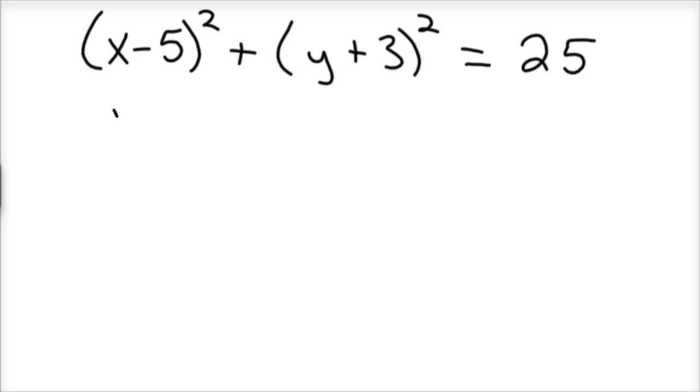Well, the center of the circle in this case is going to be positive 5 and negative 3, because you change the sign as you come out of the parentheses there. So here's the 5, here's the 3. And it's a positive 3 here, and it's a negative 5 here.